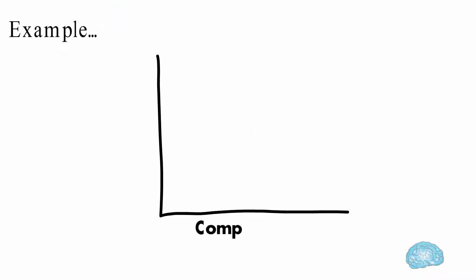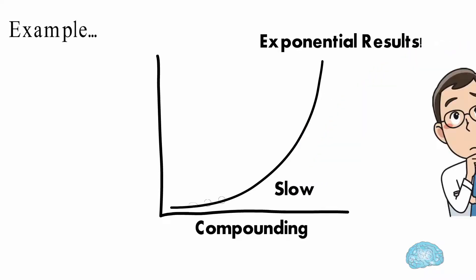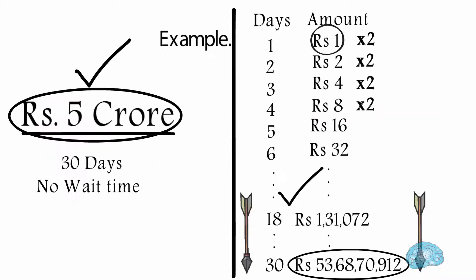Compounding is slow. During initial days, we might feel nothing great is happening. No big change is noticed. But over a period of time, when results become noticeable, that's when compounding magic happens. In the example that we saw, the compounding magic happens on the 18th day. This is called the tipping point.